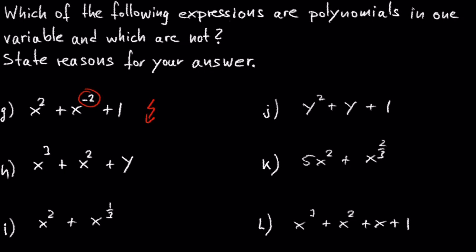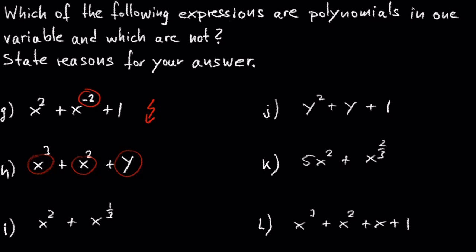In H we have x cubed plus x squared plus y. In this example we have two variables x and y. But the question is asking for one variable. So this is not a polynomial in one variable.